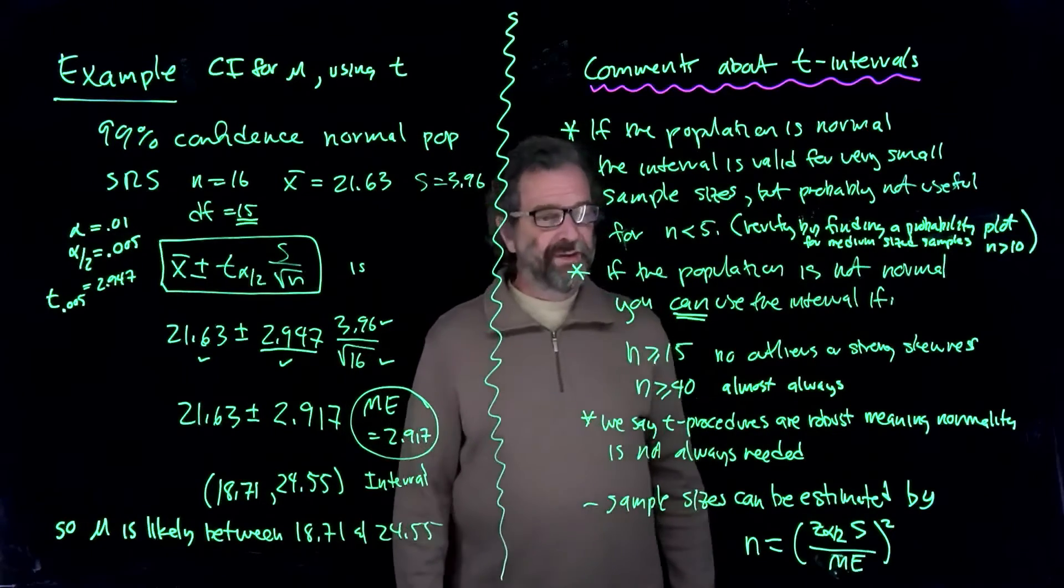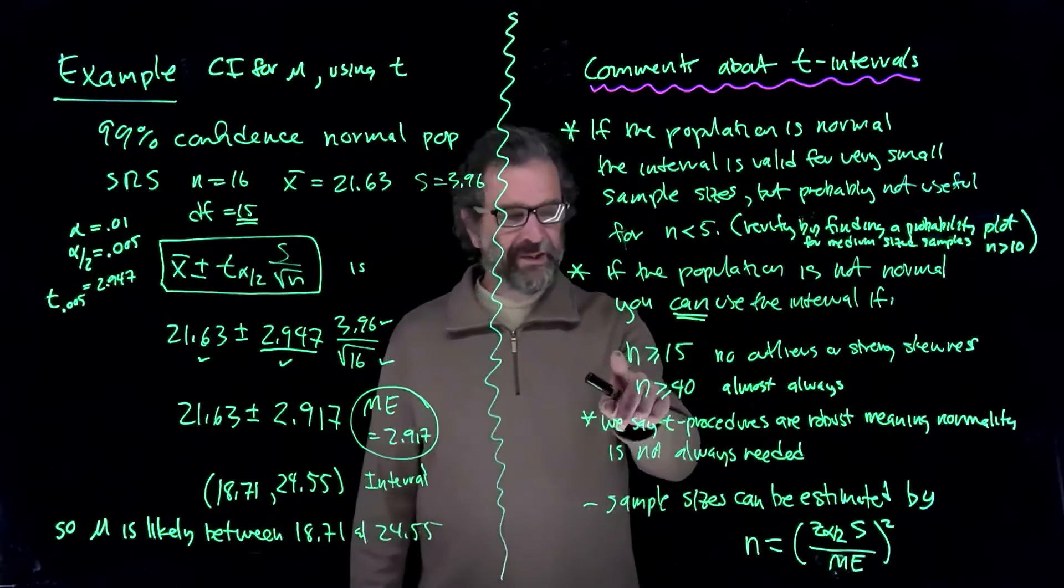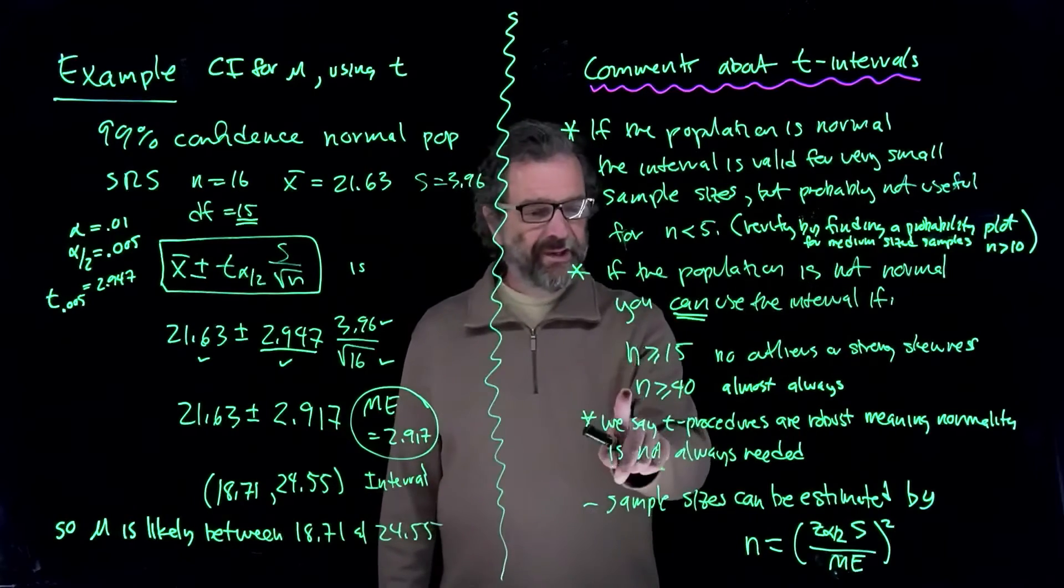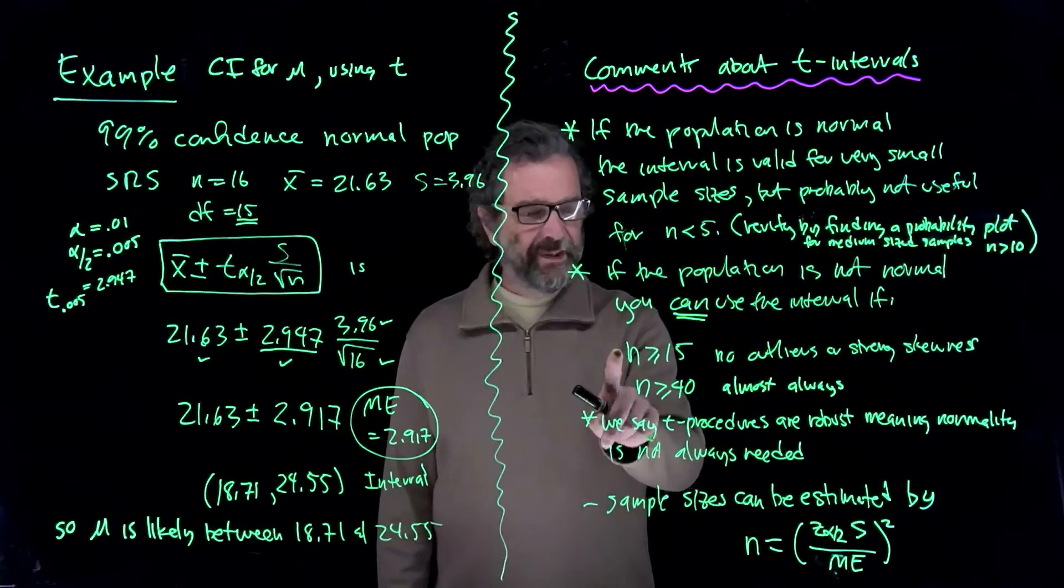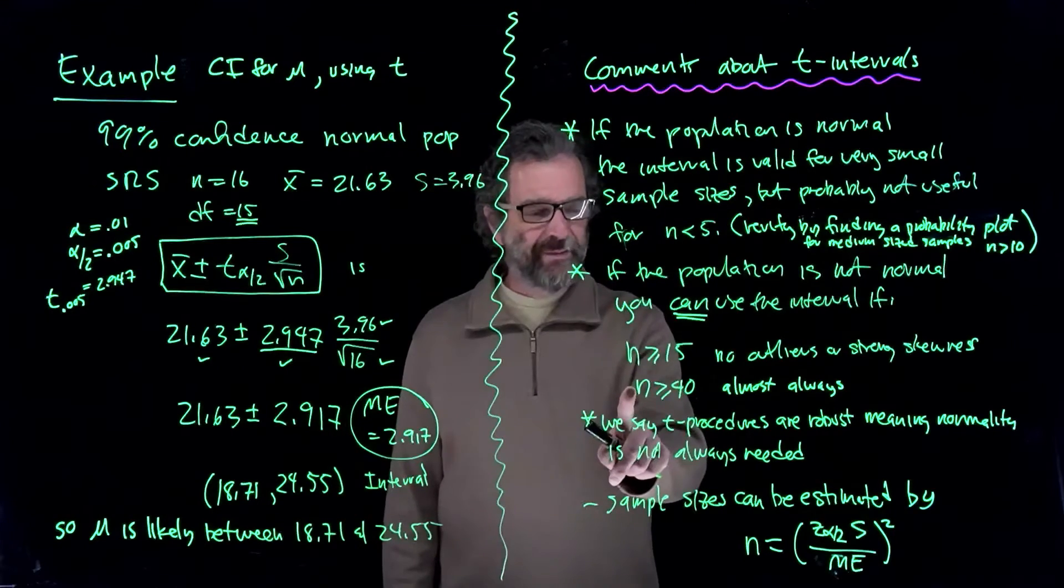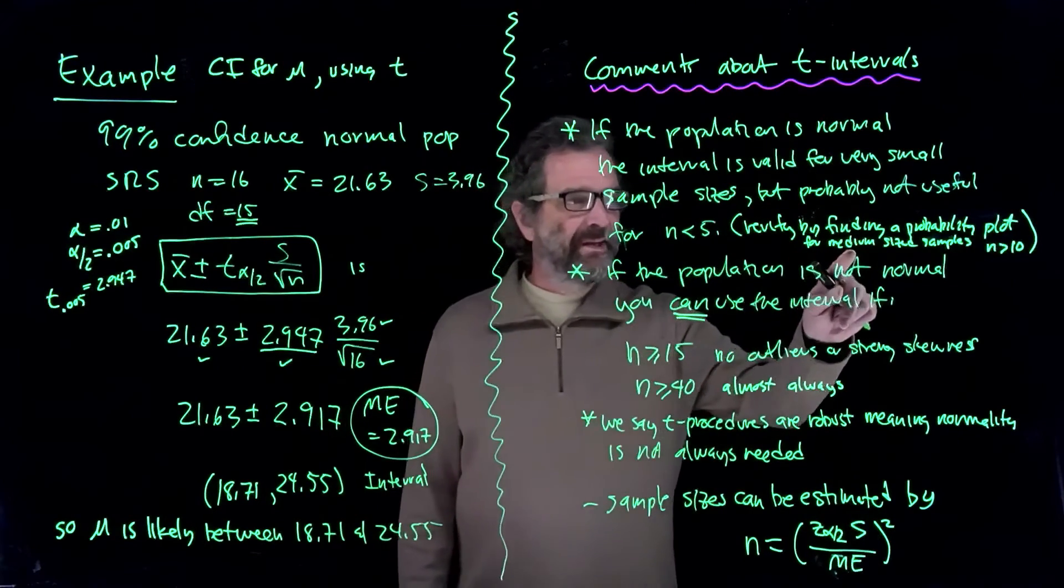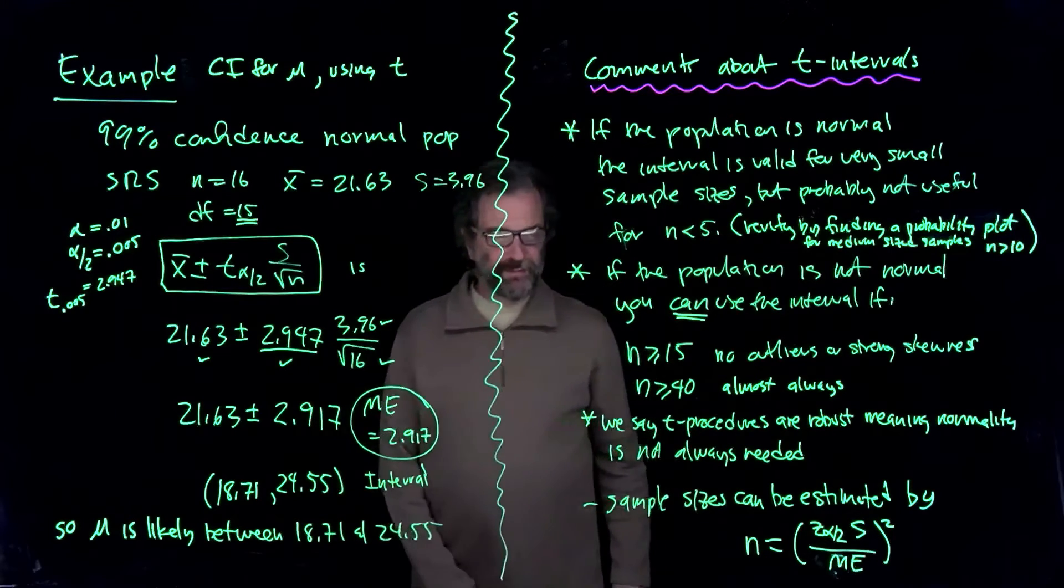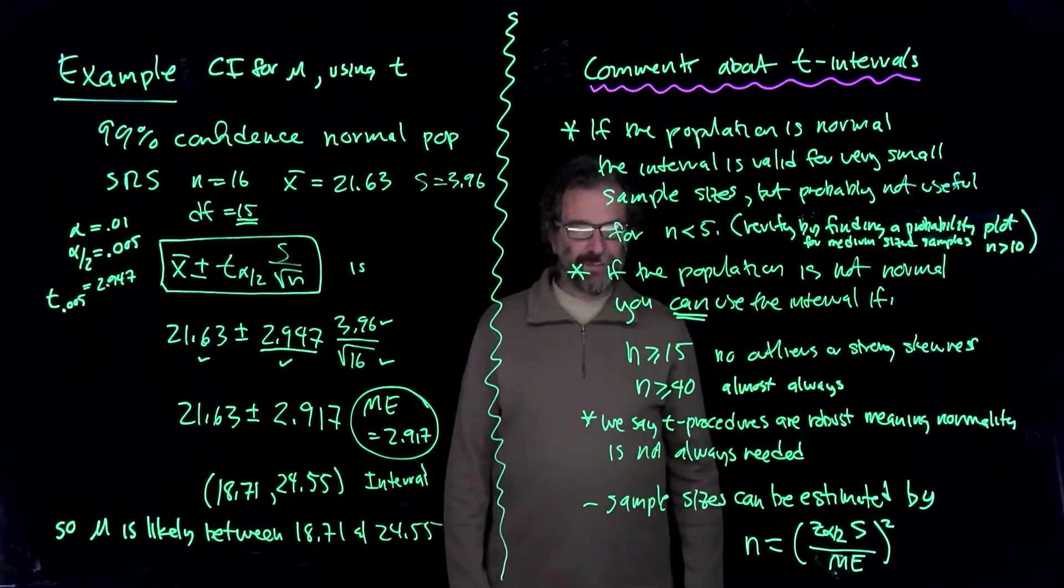So I don't have to look at a normal probability plot with these sample sizes. I can just look at a histogram and go, hey, it meets the condition. I have a sample size of at least 15 or at least 40. So I don't have to worry about exact normality or a straight line on the probability plot. So that's why we call them robust.